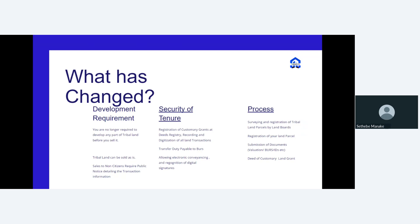You can purchase tribal land directly — it doesn't require you to have any kind of habitable development on it, as it used to be before. Before the Tribal Land Act, there was a requirement that before you sell, you should have some level of development on the land, otherwise you couldn't sell it. Now you can sell tribal land outright, as it is.